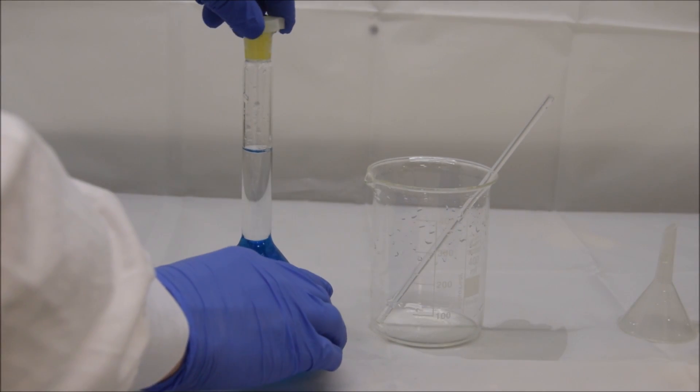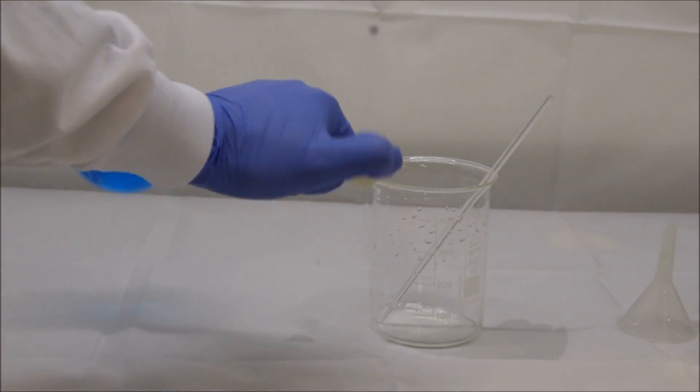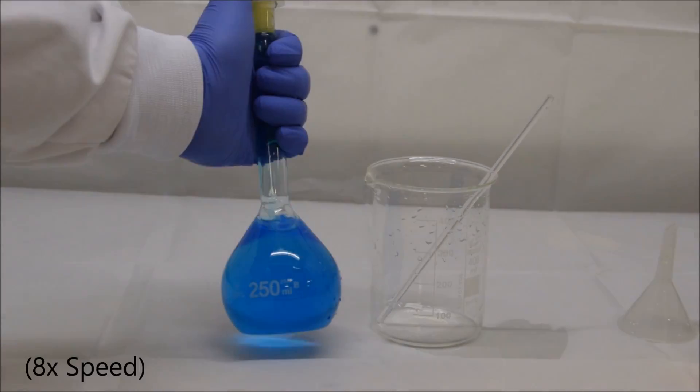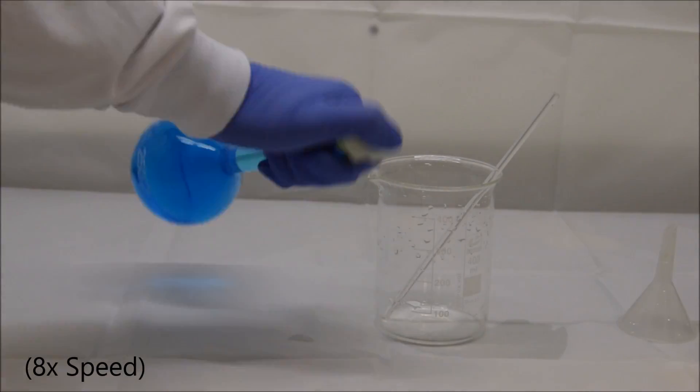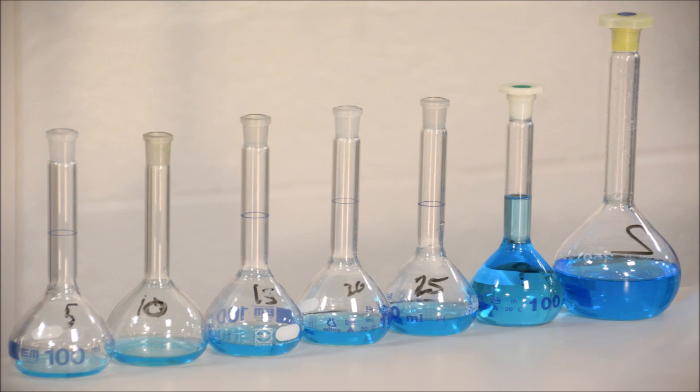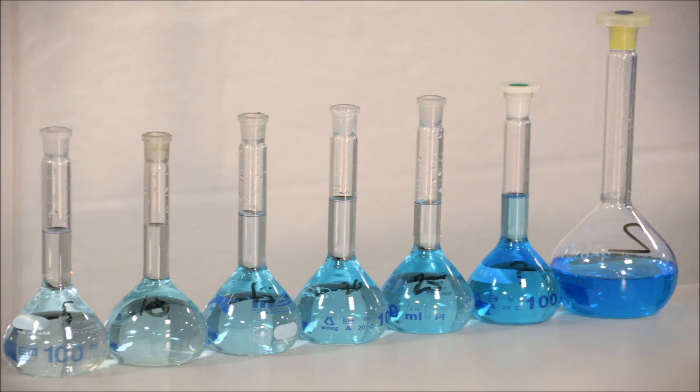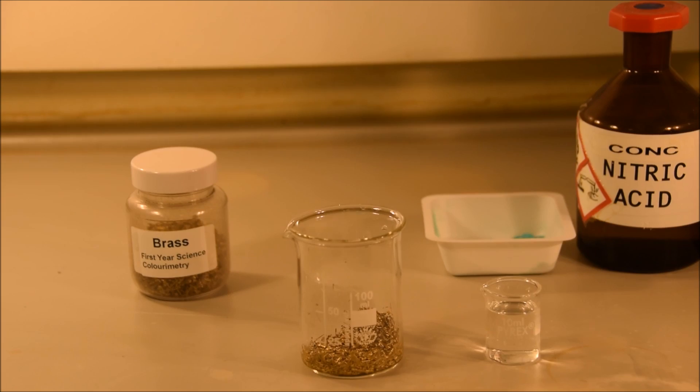Okay so very last step then before we're finished. Make sure that the stopper is in place, twist it and push down and then put your thumb on the top, grab it by the stem and invert it twenty times. Once we're finished making up our standard, we can dilute it down into several different concentrations by pipetting different amounts into 100 mL volumetric flasks and making each of those up to the line. Then we're ready to get the UV-Vis spectrometer out and start making our measurements.